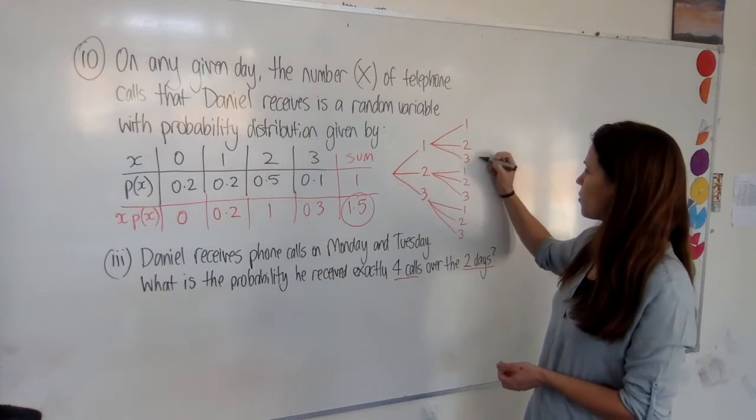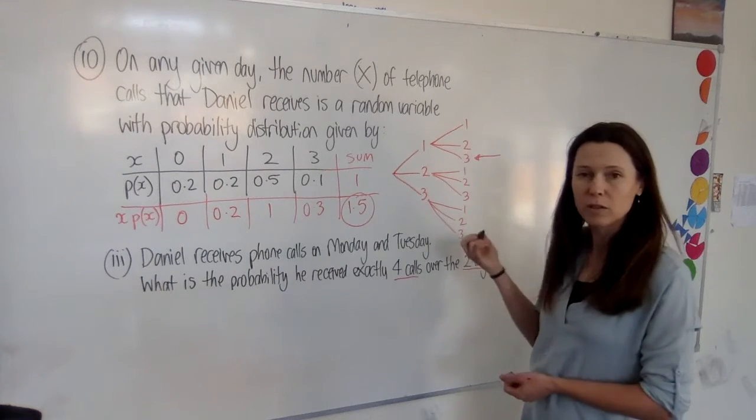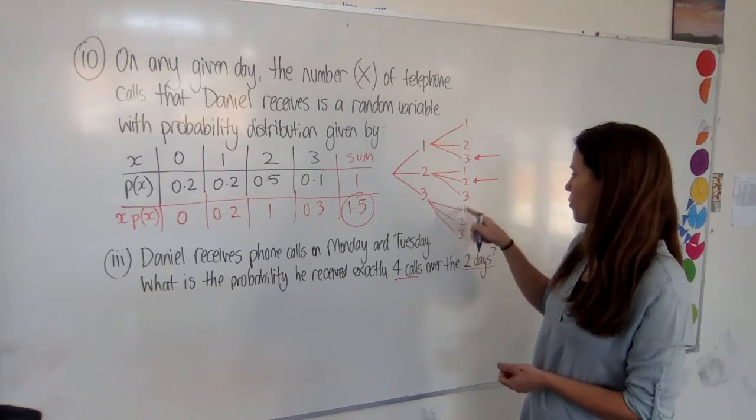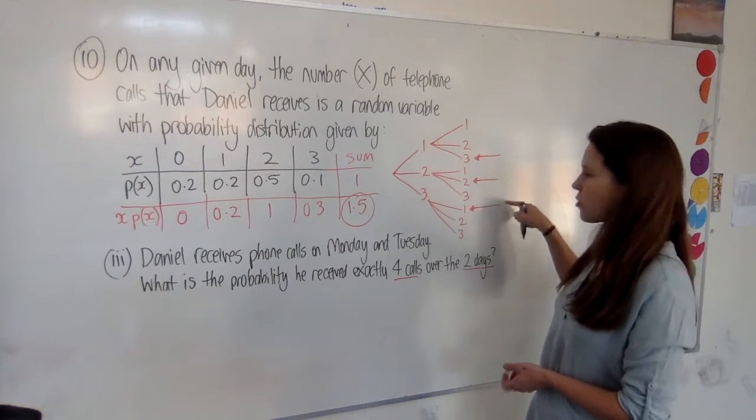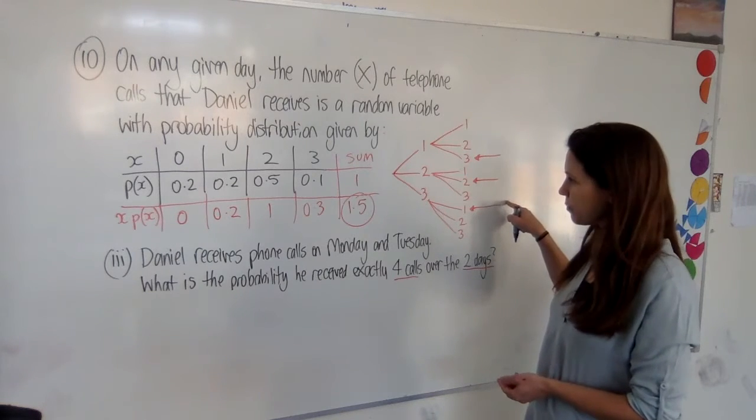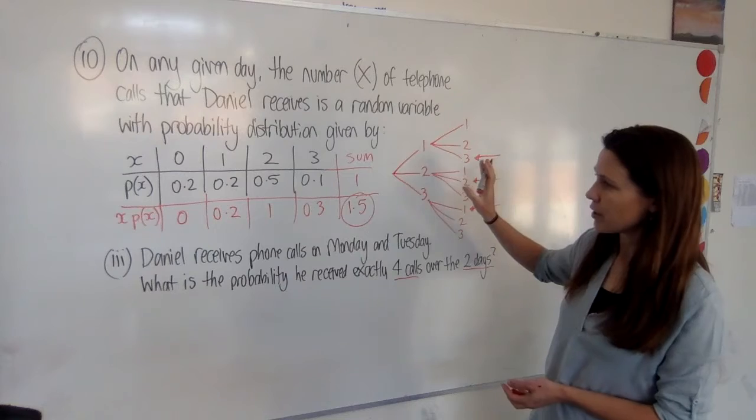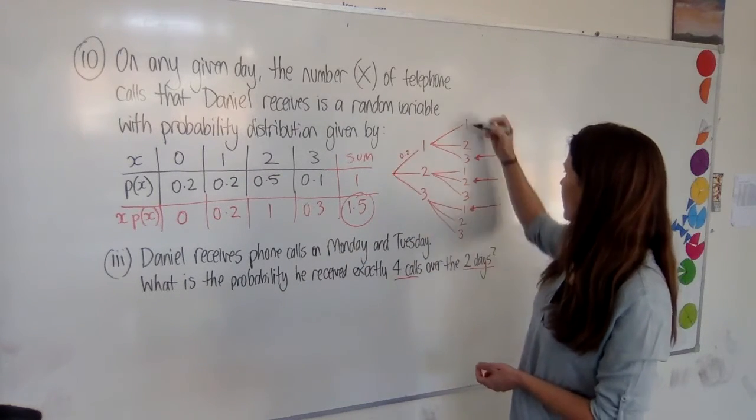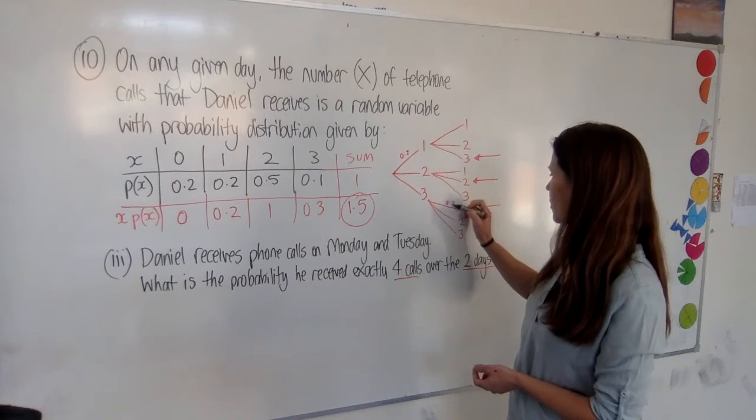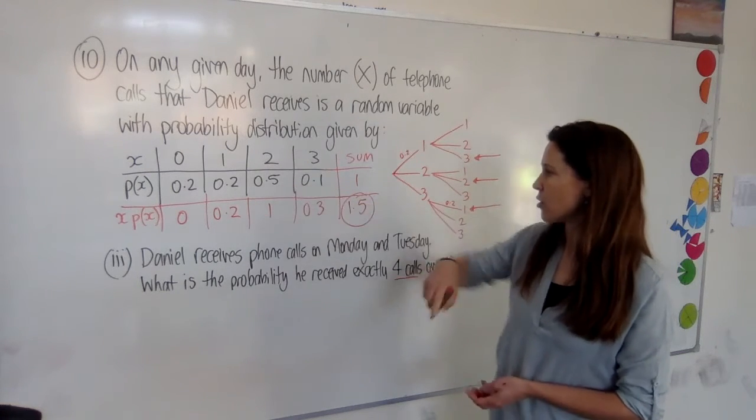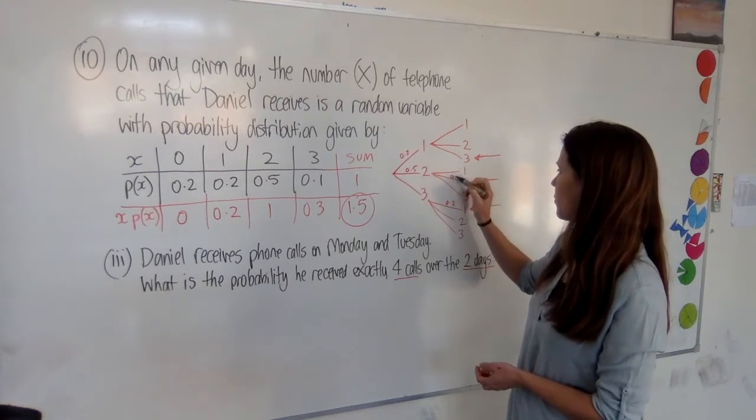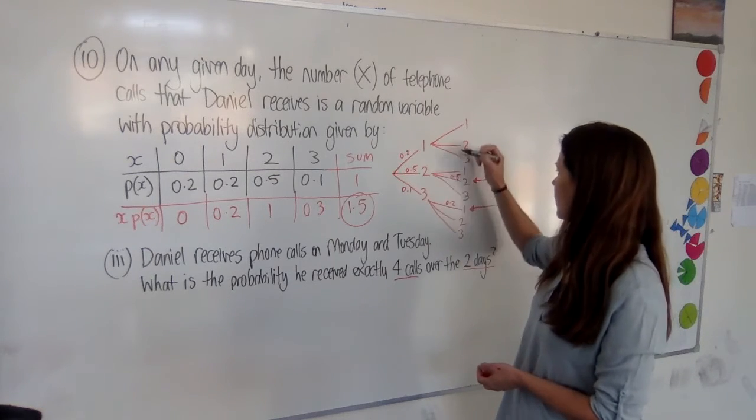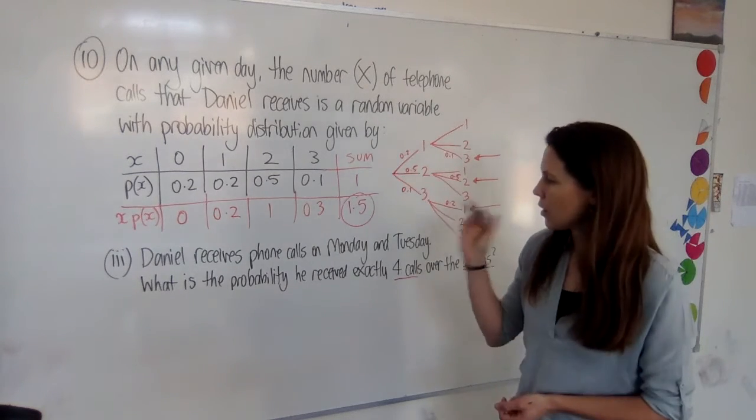If he got one call and then three calls, that would give us four calls altogether. If he got two and two, that would also give us a total of four. Or three and one would give us a total of four. So we're only really interested in these three branches. Having this here helps you, though. If you want, you can write the probabilities on the branches. We've got 0.2 every time there's a one there. So I can put that in on all of the ones that I'm actually going to need. The chance of getting two calls is 0.5. So I can put that on both of the branches I'm going to use. And the chance of getting three calls is 0.1. So I need that there and there.